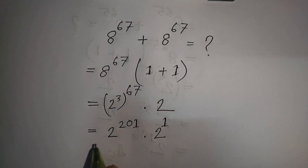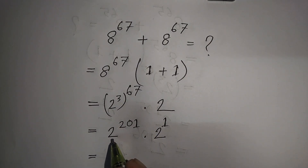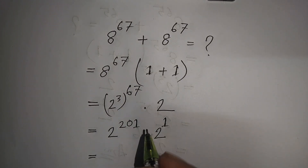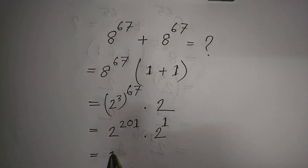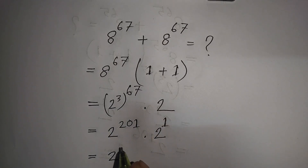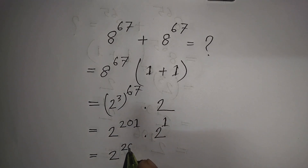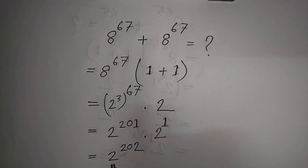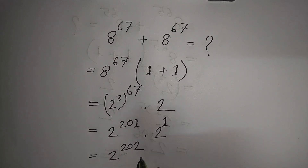So 2^201 times 2^1 equals 2^(201+1) = 2^202. Therefore, 2^202 is the correct answer.